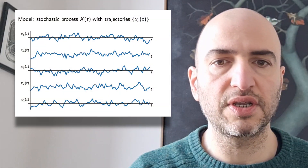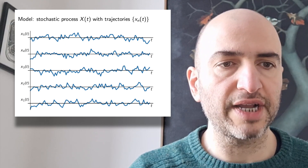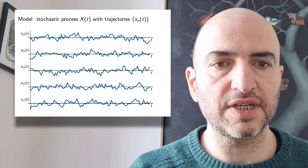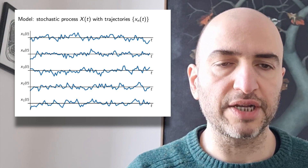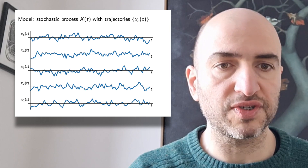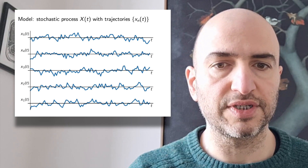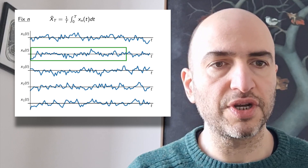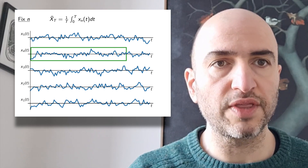The standard model of such a situation is the stochastic process. This is a mathematical object big X of t which has a set of trajectories little x n of t. So little x n of t is the observation in system n at time t. Here are some simulated trajectories in which time runs horizontally across the screen, systems run vertically up the screen, and we're looking at five different trajectories. The first type of average we can take is a time average where we fix the system — in this case n equals 4.